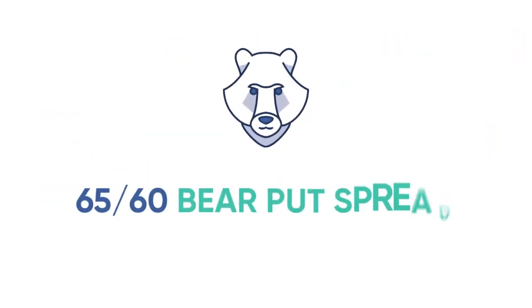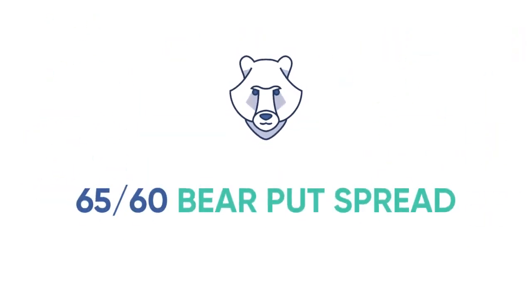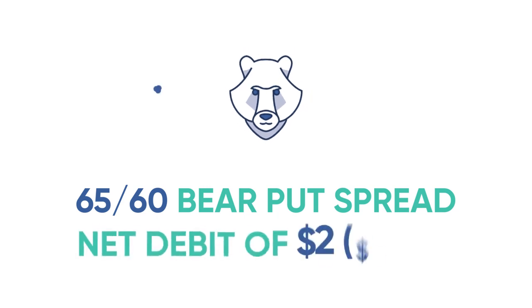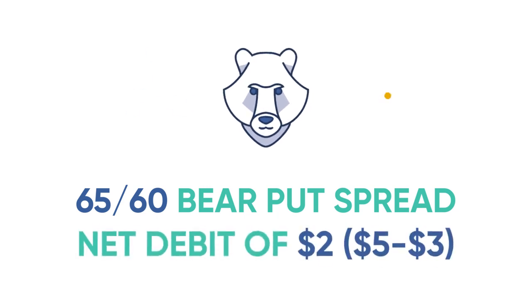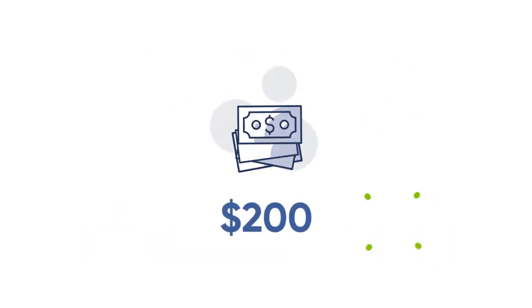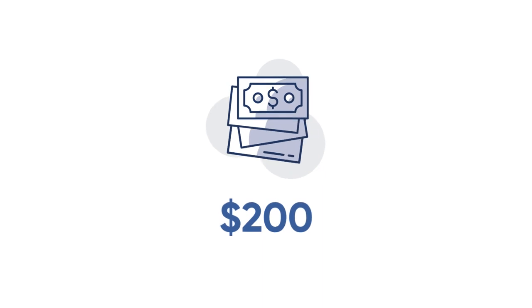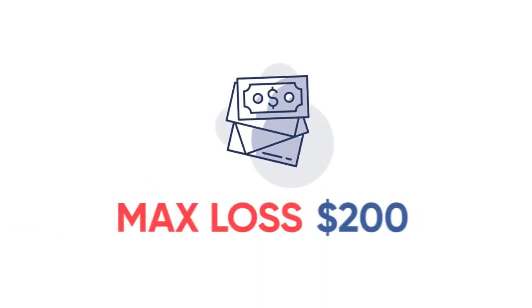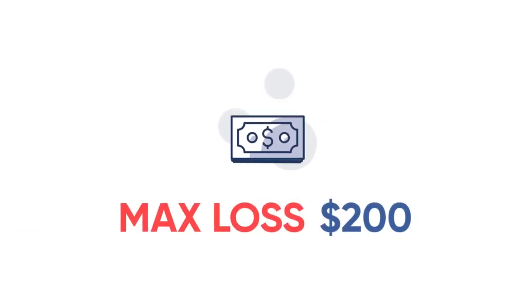You've now bought the XYZ 65/60 bear put spread for a net debit of $2. The premium you paid — $200 per spread — is the most you can lose in this example.